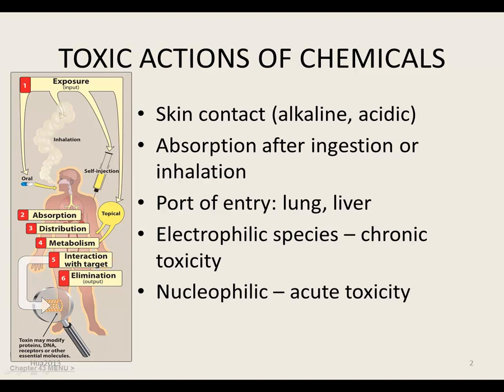However, the lung — portal of entry for gases, vapors, and particles that can be inhaled — the liver — portal of entry of ingested chemicals — and tissues with a high blood flow, such as brain and kidney, are particularly vulnerable to the toxic action of chemicals. In addition, the heart is sensitive to any toxin-induced disruption in ionic gradients.